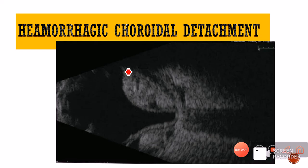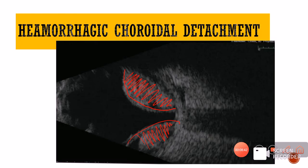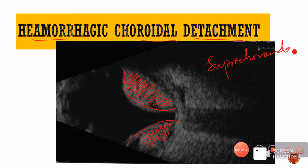In a hemorrhagic choroidal detachment, we again have dome-shaped elevations, but the difference from the serous type is that the echoes inside are much more numerous. Therefore, this is a hemorrhagic choroidal detachment, which can also be called supra-choroidal hemorrhage — supra-choroidal hemorrhage and hemorrhagic choroidal detachment are the same term.